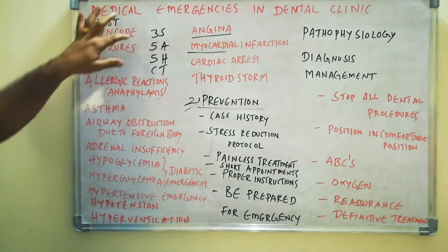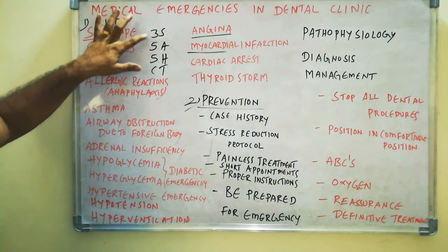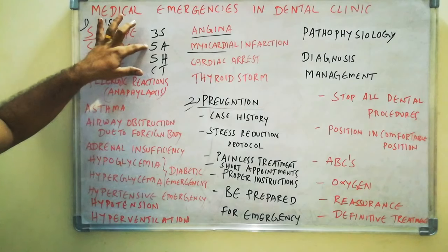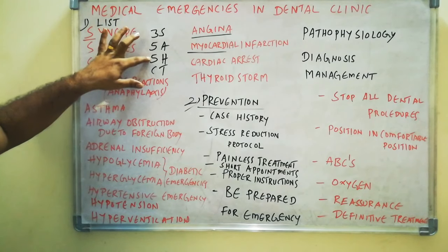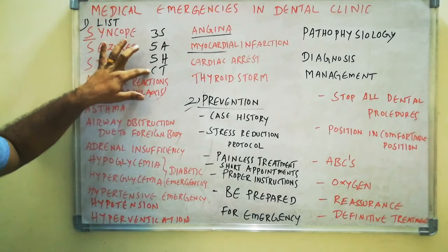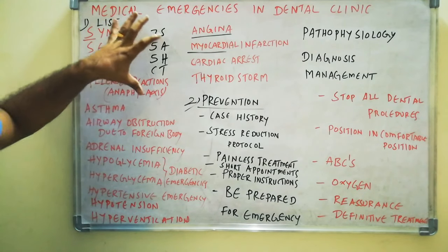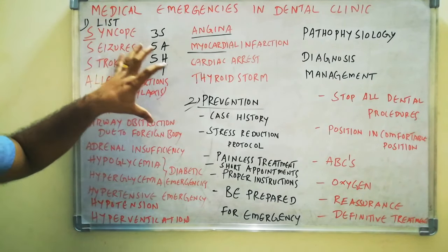After that you have cardiac arrest and thyroid storm, that is thyrotoxicosis — CT. So remember: 3S, 5A, 5H, CT. That gives you almost 16 medical emergencies. Now coming to the prevention of medical emergencies.